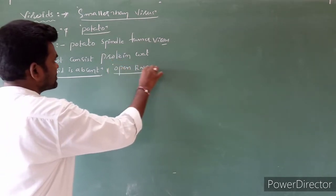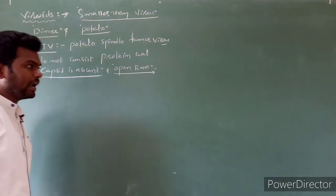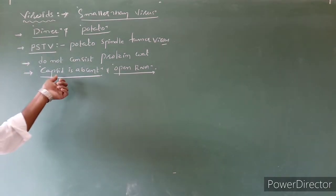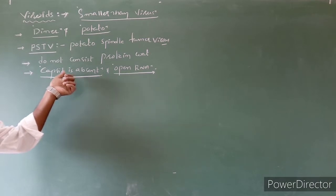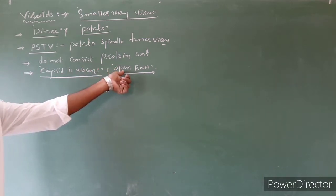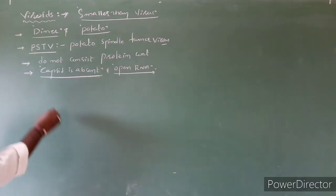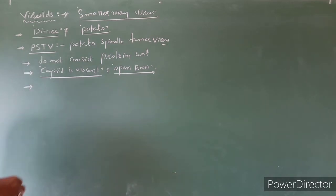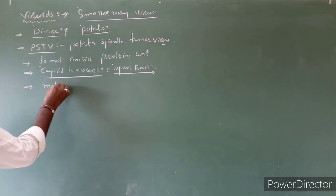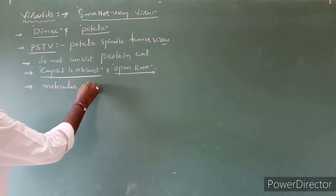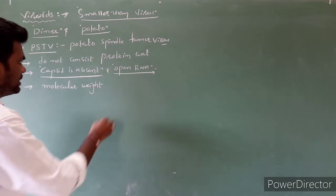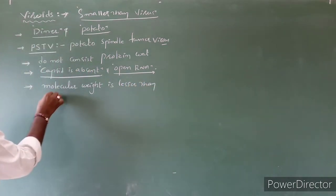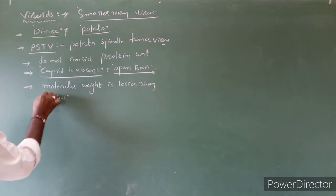Due to the absence of the capsid, the RNA present is called Naked RNA or Open RNA. Generally in Tobacco Mosaic Virus, RNA is present within a capsid. But in Viroids, the capsid is absent, so the RNA is Open RNA or Naked RNA. Also, the molecular weight of Viroids is lesser than that of viruses.